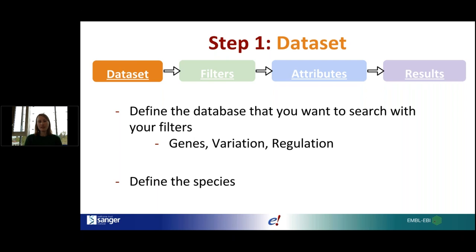The dataset is the database within Ensembl you want to search, plus the species of interest. There are three Ensembl databases you can search: the genes database, the variation database, and the regulation database. The variation database contains genetic variants, and the regulation database lets you extract information on regulatory features that have been annotated.